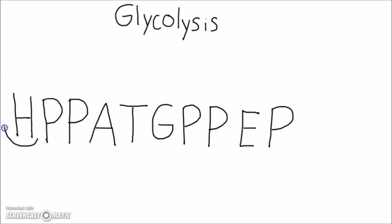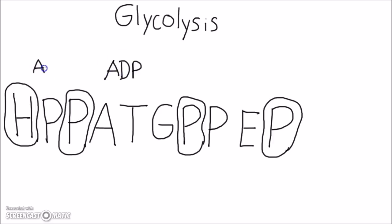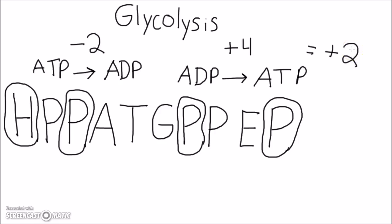The important enzymes to remember are the 1st, 3rd, 7th, and 10th: hexokinase, phosphofructokinase-1, phosphoglycerate kinase, and pyruvate kinase. All of these involve ATP. The first two convert ATP to ADP — using energy — while the second two convert ADP to ATP — gaining energy. The first two subtract 2 ATP, and the second two add 4, for a net of 2 ATP molecules gained.